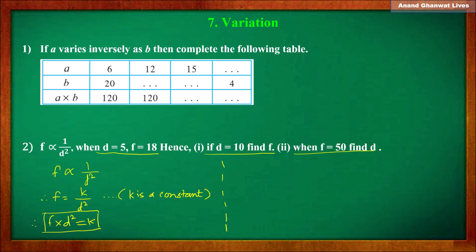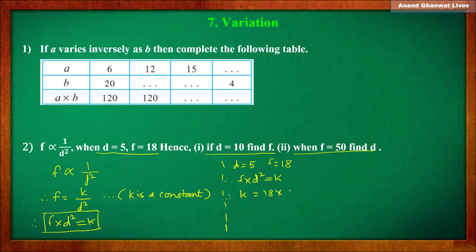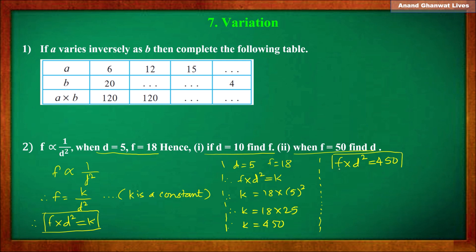Using the given information: when d = 5, f = 18, so f × d² = k gives k = 18 × 5² = 18 × 25 = 450. The value of k is 450. The modified equation of inverse variation is therefore f × d² = 450.